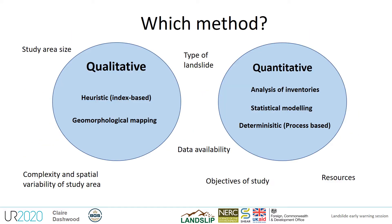When choosing one of the many methods available to produce a susceptibility map, be it qualitative or quantitative, it is important to consider a number of factors. Consider what method is appropriate for your study area — this will be different if you are working at a local or slope scale versus national scale. Also consider what resources, computing power and time are available to you. Data availability is key. If you don't have local expertise, you may not consider a heuristic approach as appropriate. Statistical approaches require a good inventory and spatially variable data, whilst the deterministic approach relies on adequate geotechnical and hydrological data being available.